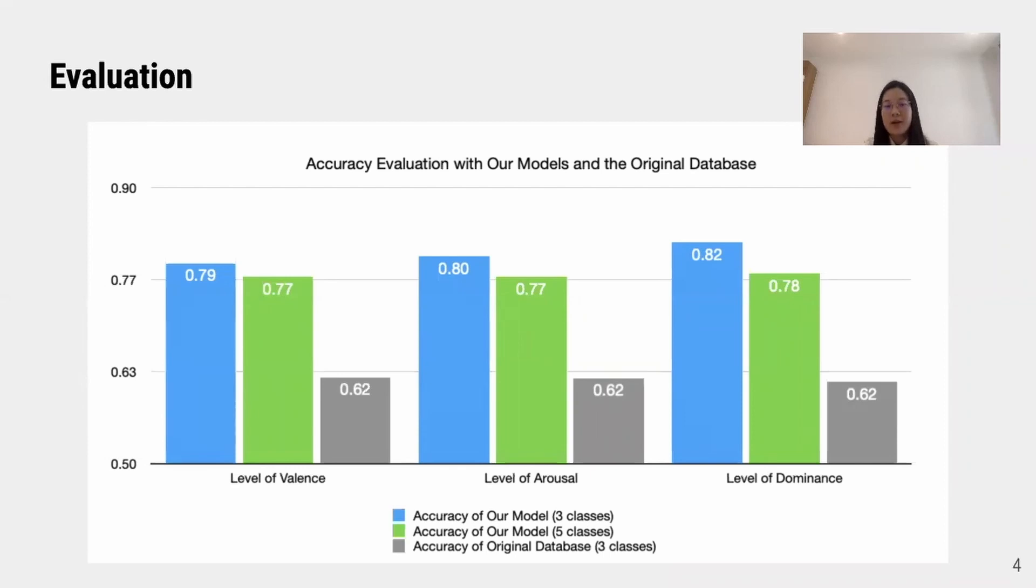So in conclusion, when comparing with the original paper which we have requested the database from, we can see from the diagram that the colorful bars represent our accuracy results.